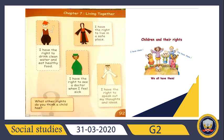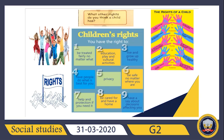Excellent. Let me answer this question for you. What other rights does a child have? You have the right to be treated fairly no matter what. You have the right to education, play, and cultural activities. You have the right to live and grow up healthy. You have the right to have people do what is best for you. You have the right to privacy. You have the right to be safe no matter where you are. You have the right to help and protection if you need it. You have the right to be cared for and have a home. And you have the right to have a say about decisions affecting you.